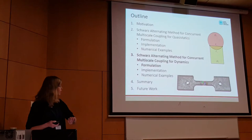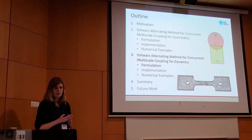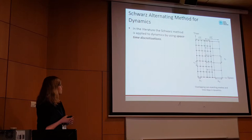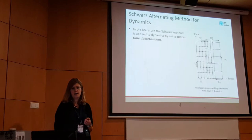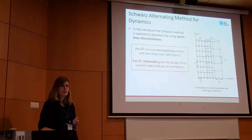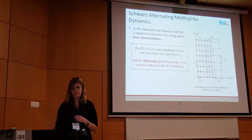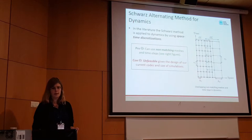I'm going to spend the rest of the time talking about dynamics, which we've been working on for the past couple of years after doing the quasi-statics. When we started, we looked in the literature and found some Schwartz-like methods based on space-time discretizations, which allow non-matching meshes in space and time across subdomains. Unfortunately, we're not able to use these kinds of methods because of the design of our codes and the size of the simulations we're interested in.